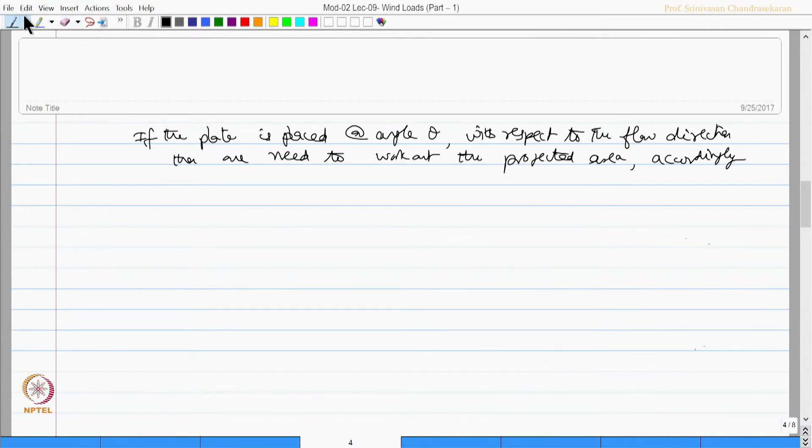For example, if this is my plate which is normal and this angle is theta with area A, and this becomes my wind direction, I need to work out the projected area. One has to carefully work out the projected area in the flow direction.